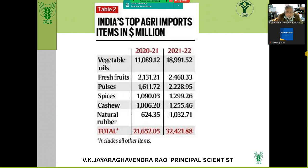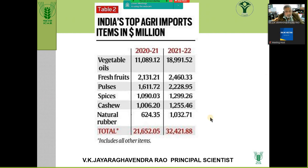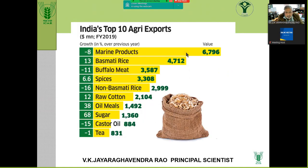If you do import substitution — especially vegetable oils, fresh fruits, pulses, cashew, and natural rubber — reducing imports is as good as saving foreign exchange and contributing to GDP and national welfare. Our top 10 agriculture exports are marine products, basmati rice, buffalo meat, spices, raw cotton, oil, and sugar. That is the reason people grow more cotton and basmati rice, while marine fisheries have taken a big lead.